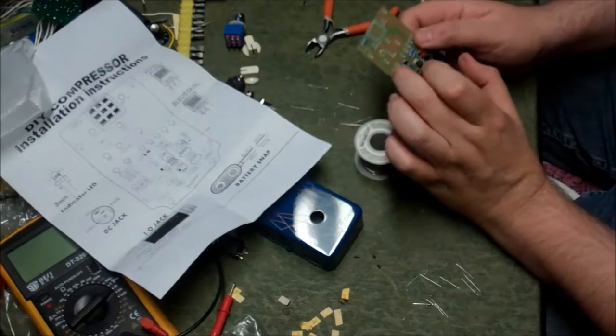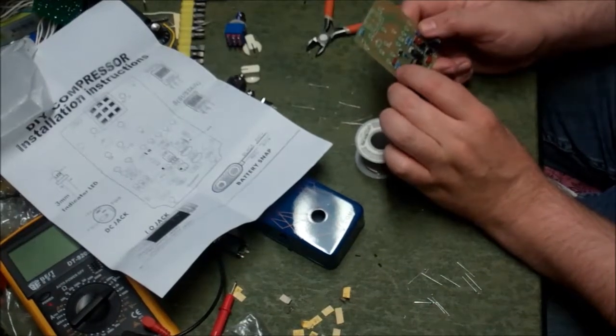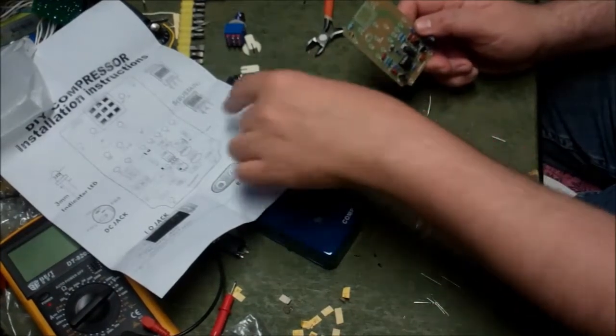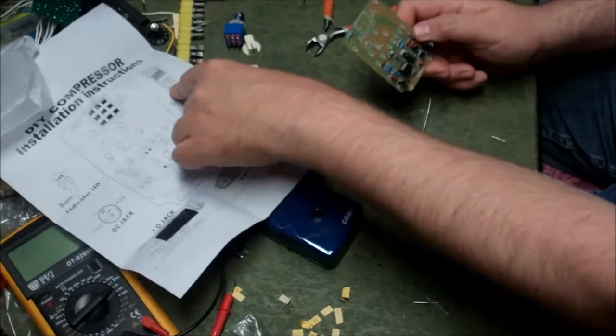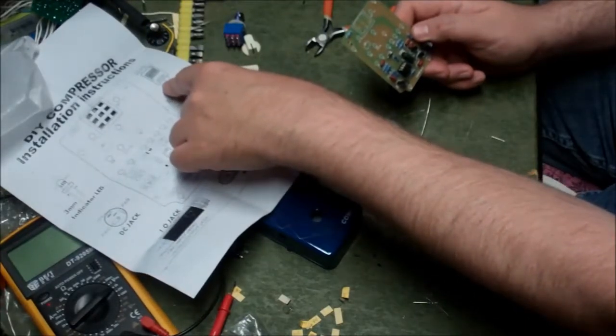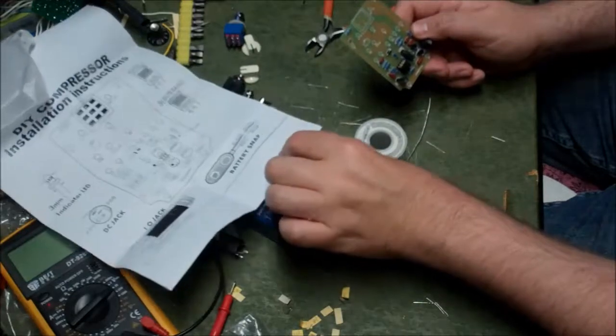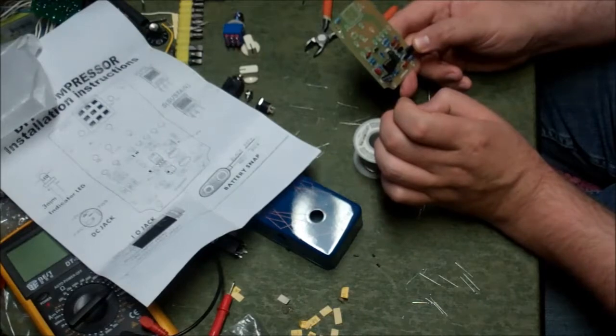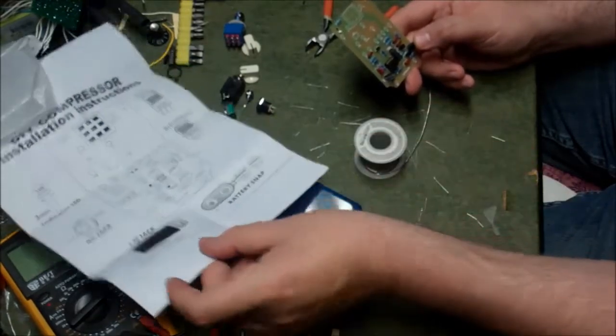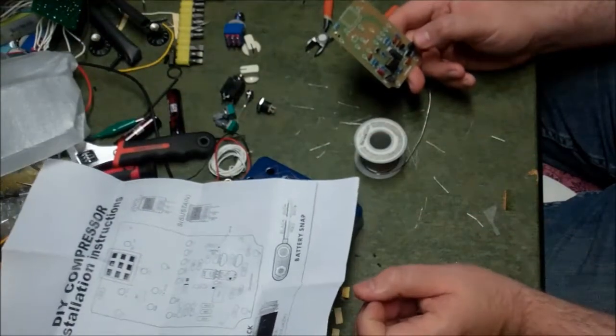Okay. So now I have S1 and S2, which should be the sustain pot, which is the 500K. And then the volume pot, which is three leads. So I've got five leads to cut for the pots. And then we can put those on. And I'll do that with the camera turned off.